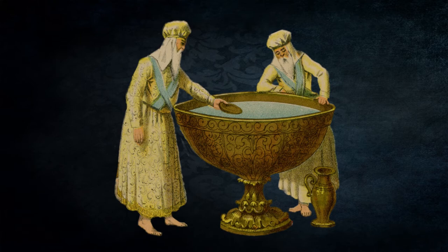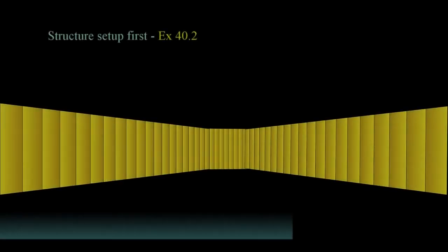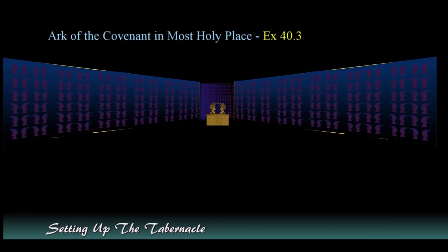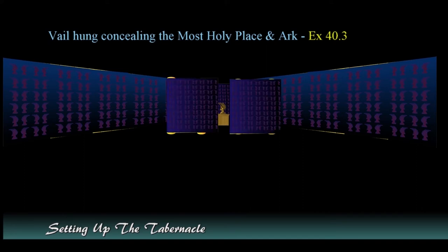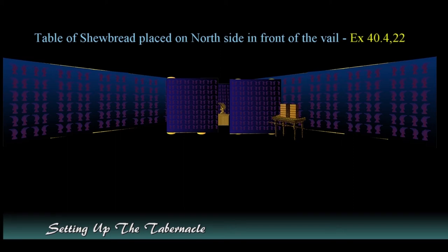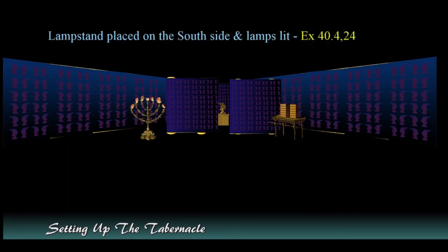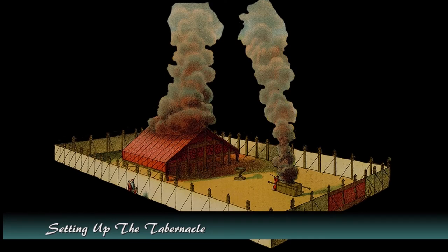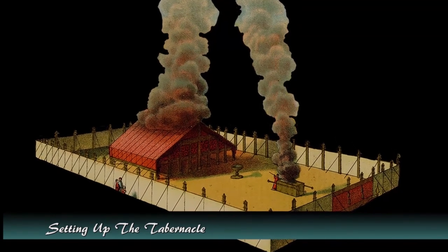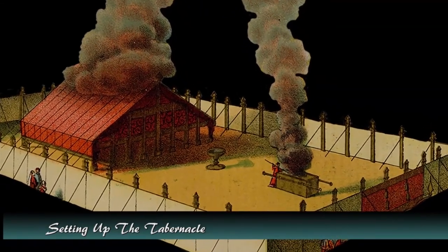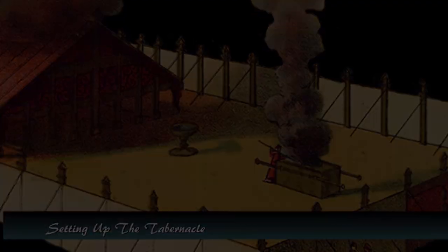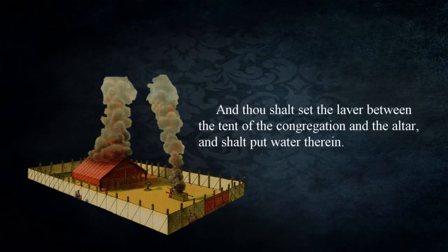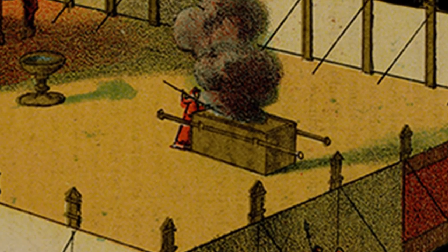We are left with a nebulous description of the laver, but we can see that it was important and served a crucial function in the daily ministry to God. Its importance is further emphasized in its placement. Setting up the tabernacle followed an inside-out sequence: the structure, then the ark and mercy seat, the veil, the table of showbread, lamp stand, altar of incense, then the door. Next the altar of burnt offering was placed, and God directed: 'Thou shalt set the laver between the tent of the congregation and the altar, and shalt put water therein' — Exodus 40:7.